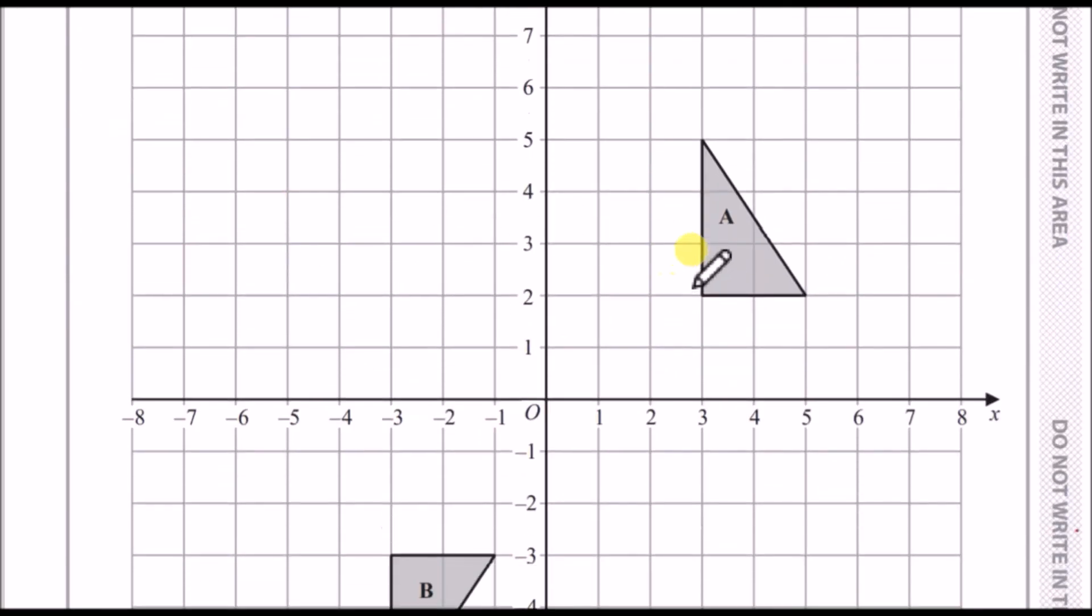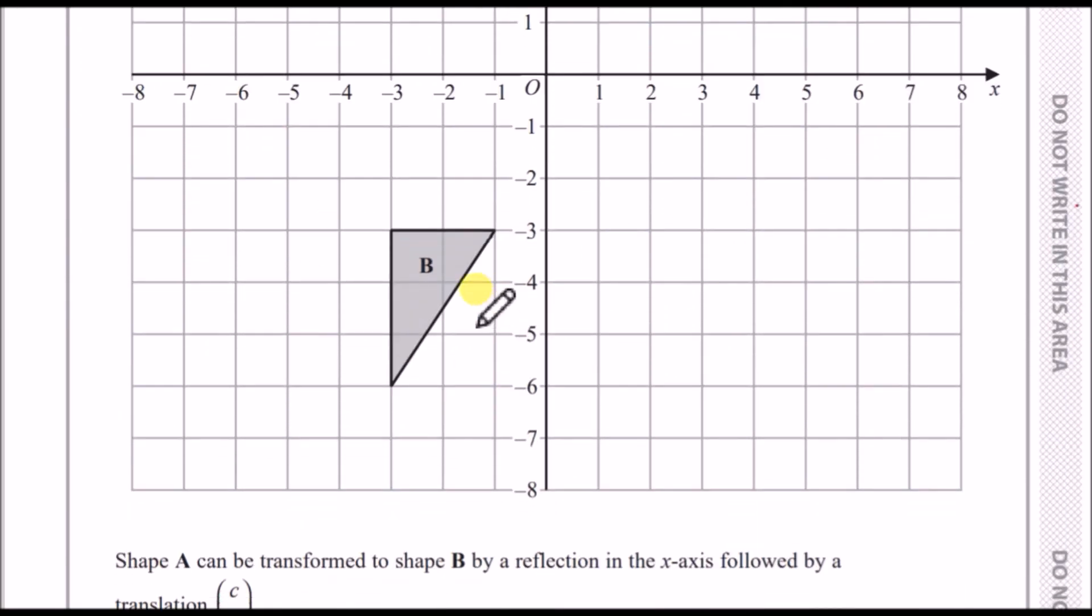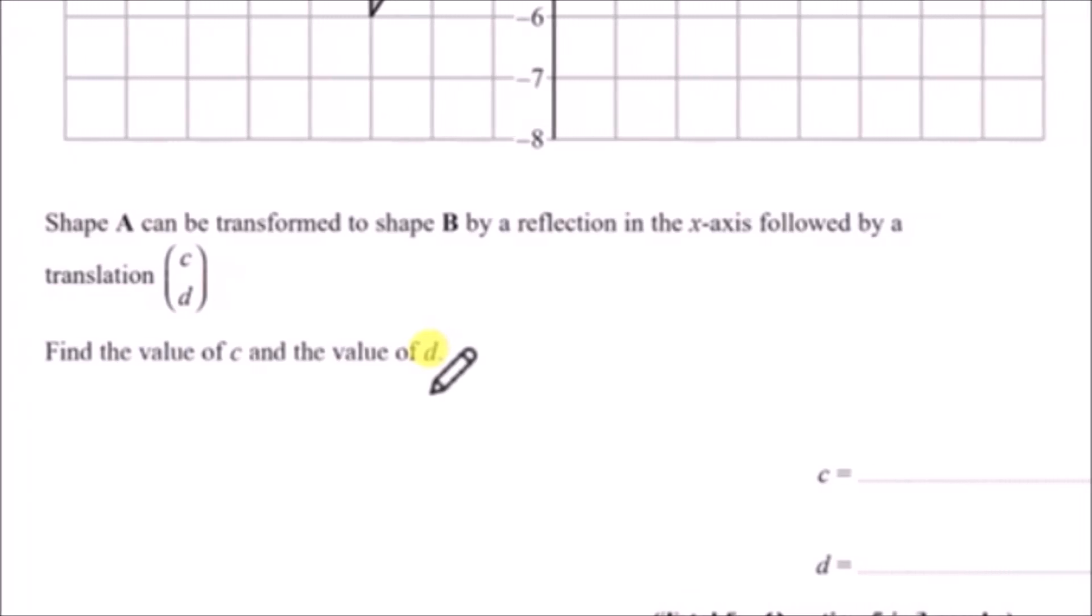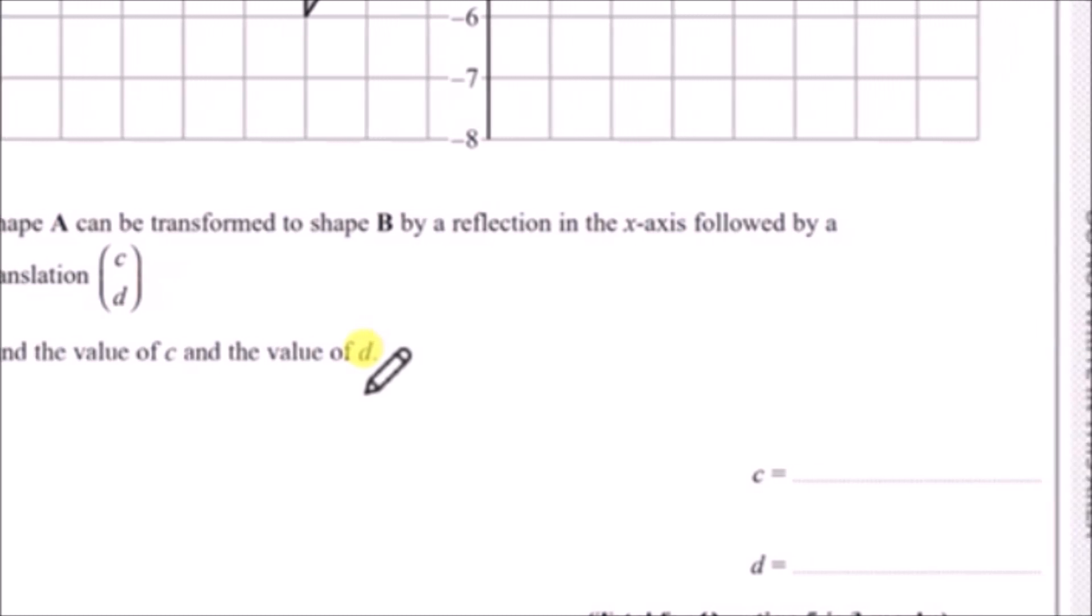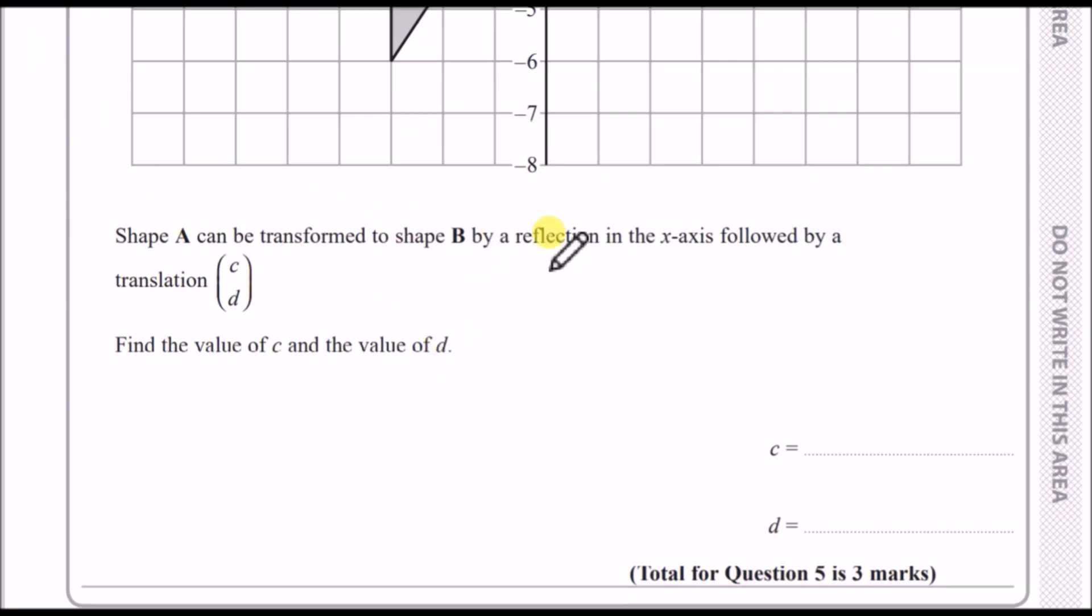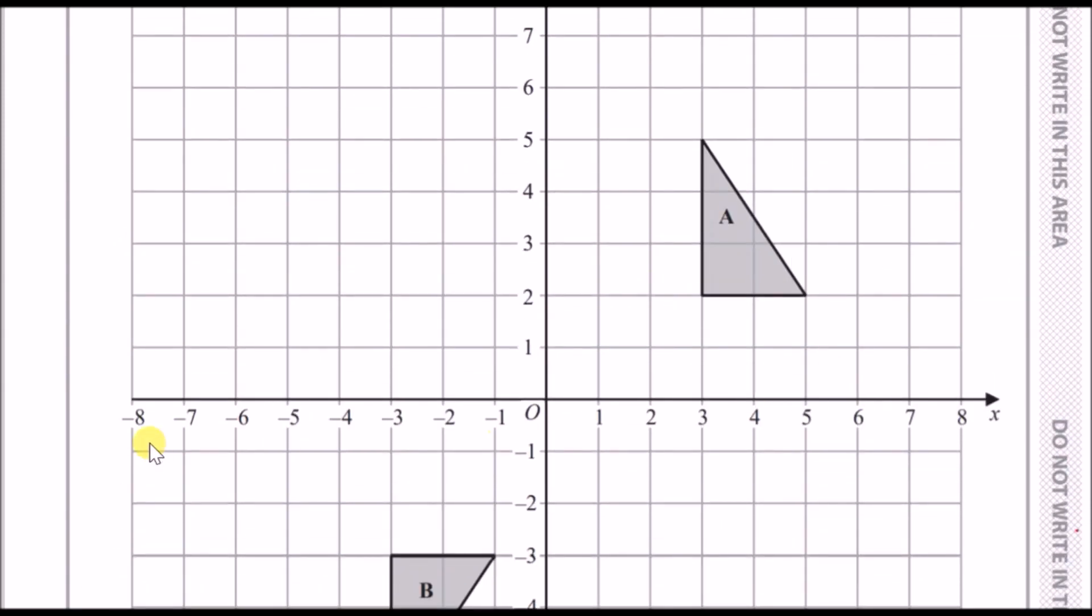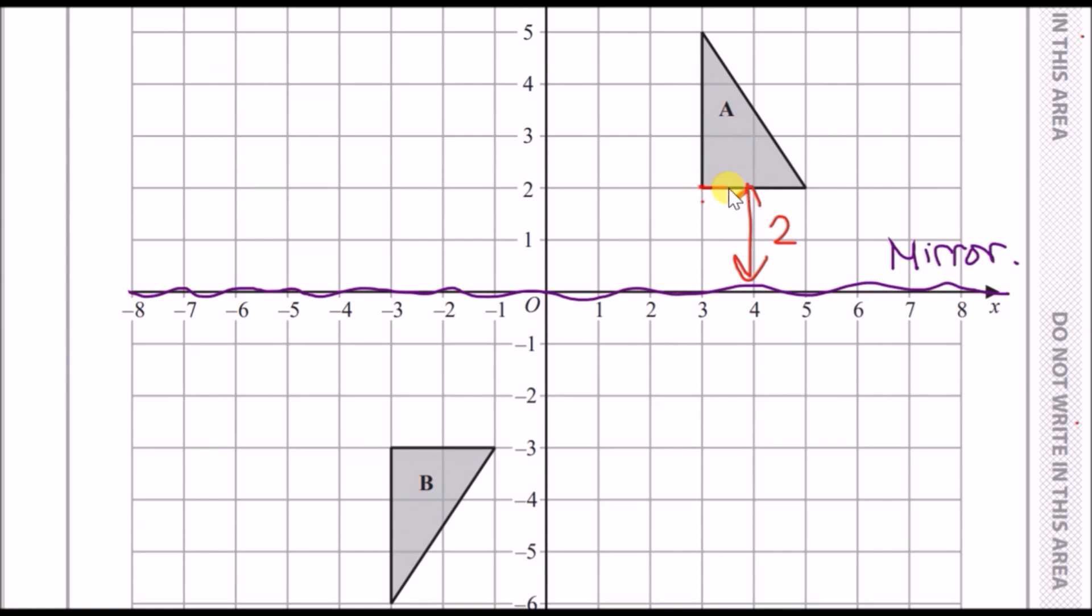Number five: shape A can be transformed to B by reflection in the x-axis followed by translation of c and d. A translation just means you're moving it across by c and up by d, so just a straight shift. The reflection is over the x-axis, so that's our mirror line. Count how many blocks this is away, in this case it's two blocks away, and if it's two blocks from the x-axis above, it must be two below.